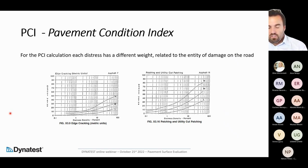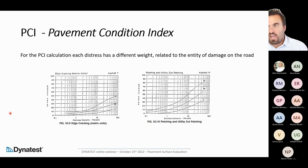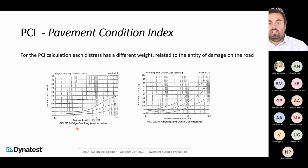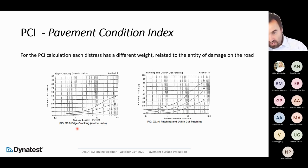A key element of PCI calculation is that not all distresses have the same weight. Some distress types carry higher damage weight in the evaluation. For example, an edge crack is less important than patching, because patching indicates the pavement was previously destroyed and repaired — and that patch will likely deteriorate quickly. So patching carries more weight in the damage assessment, while an edge crack has less influence on pavement quality.